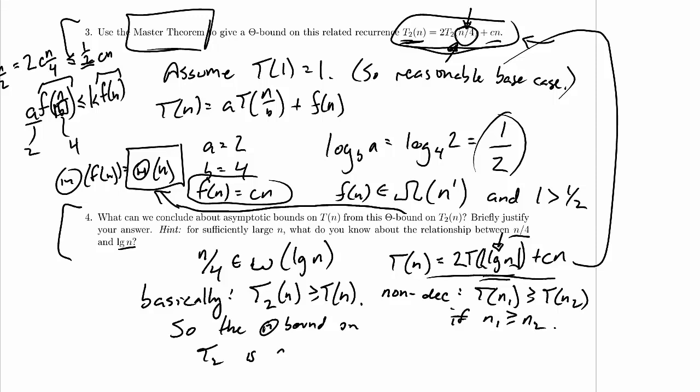is an O bound, big O, on T. So we now know T(n) is an element of big O of n.